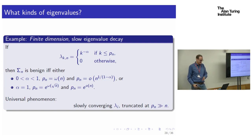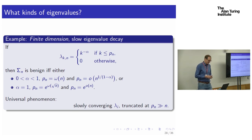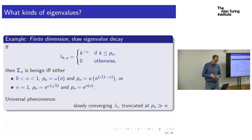So lambdas decaying slowly and then being truncated at a point large compared to N — that's the setting where we get benign overfitting. Being in a finite dimension seems to be important unless we have a very special eigenvalue decay case.